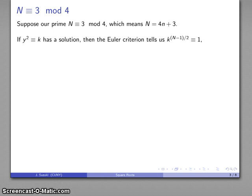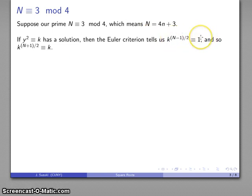Our Euler criterion tells us that if y² ≡ k has a solution, then k^((n−1)/2) ≡ 1. Multiplying both sides of this congruence by k, that gives us k^((n+1)/2) ≡ k. A little bit of arithmetic confirms that congruent statement.